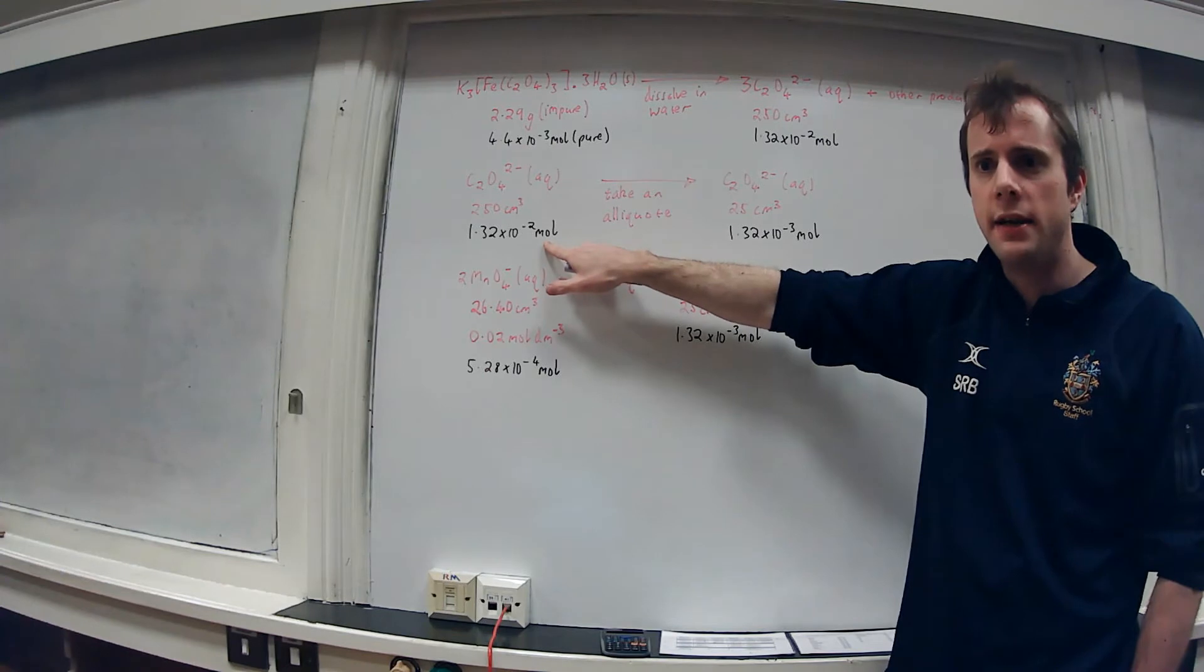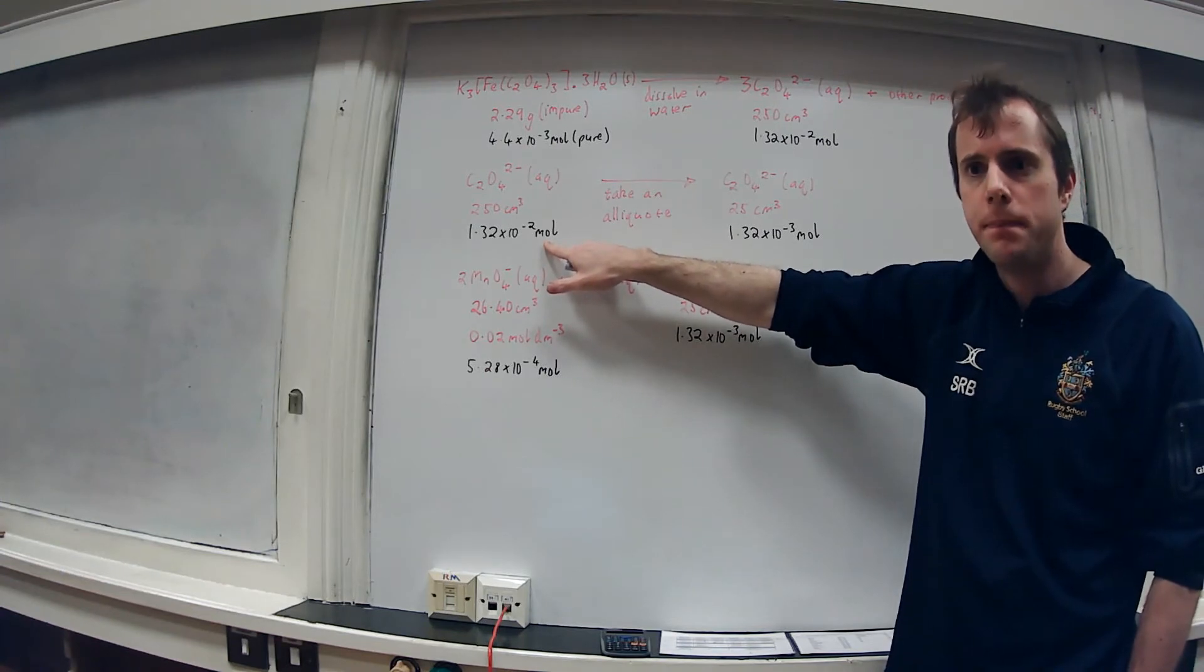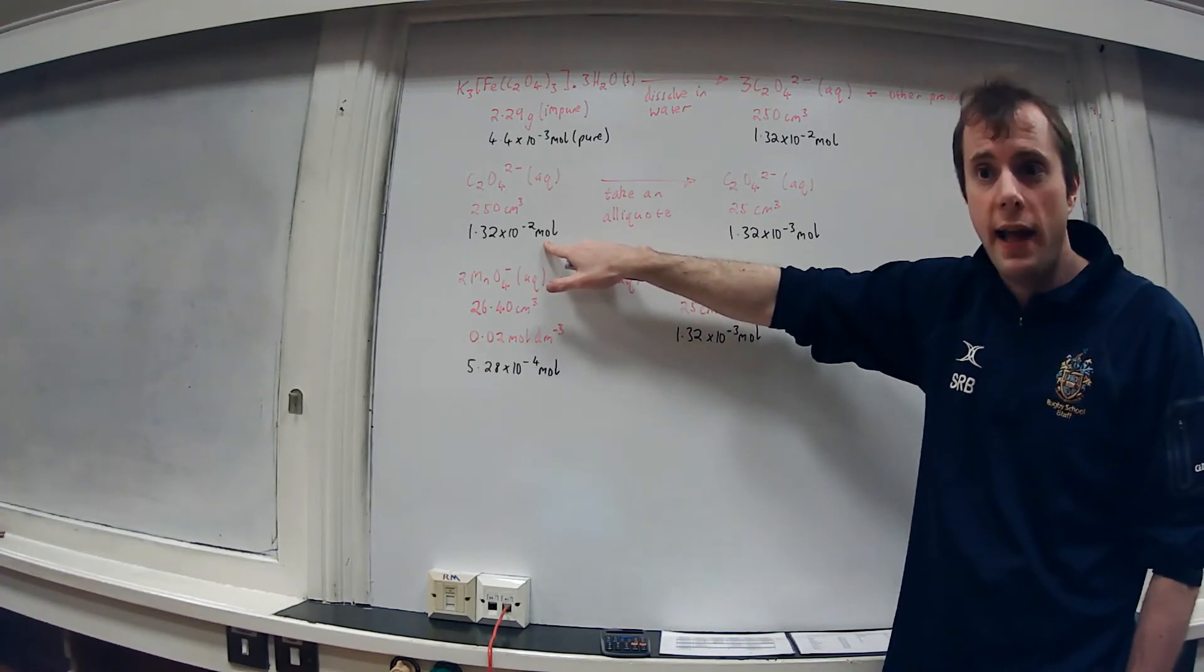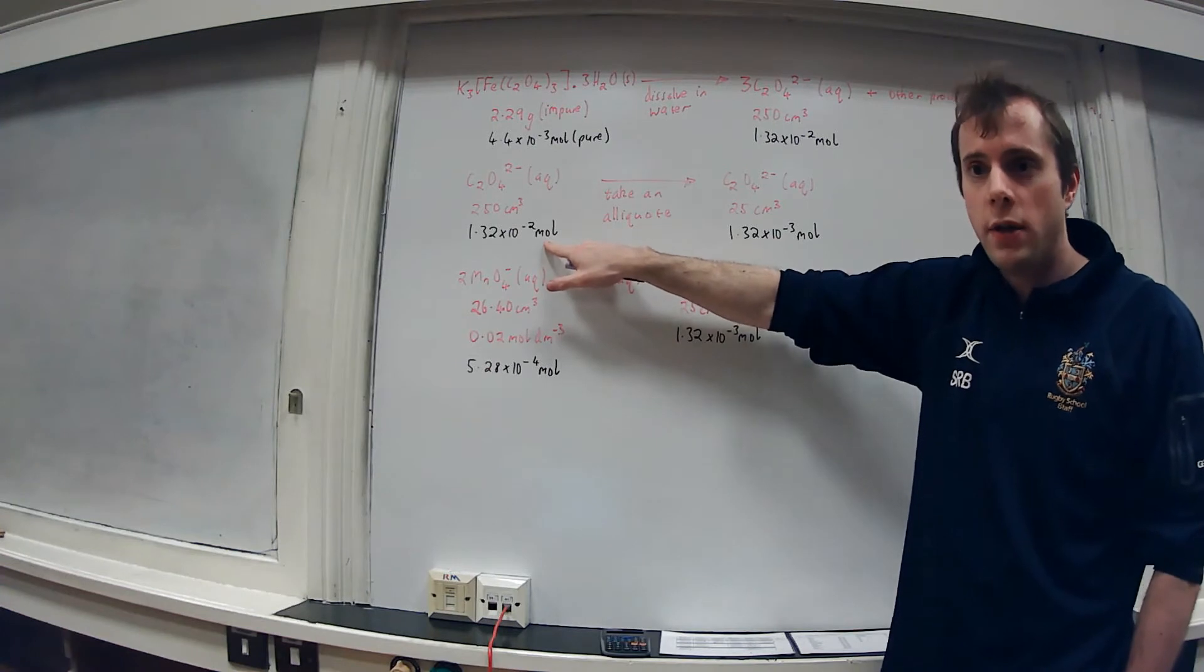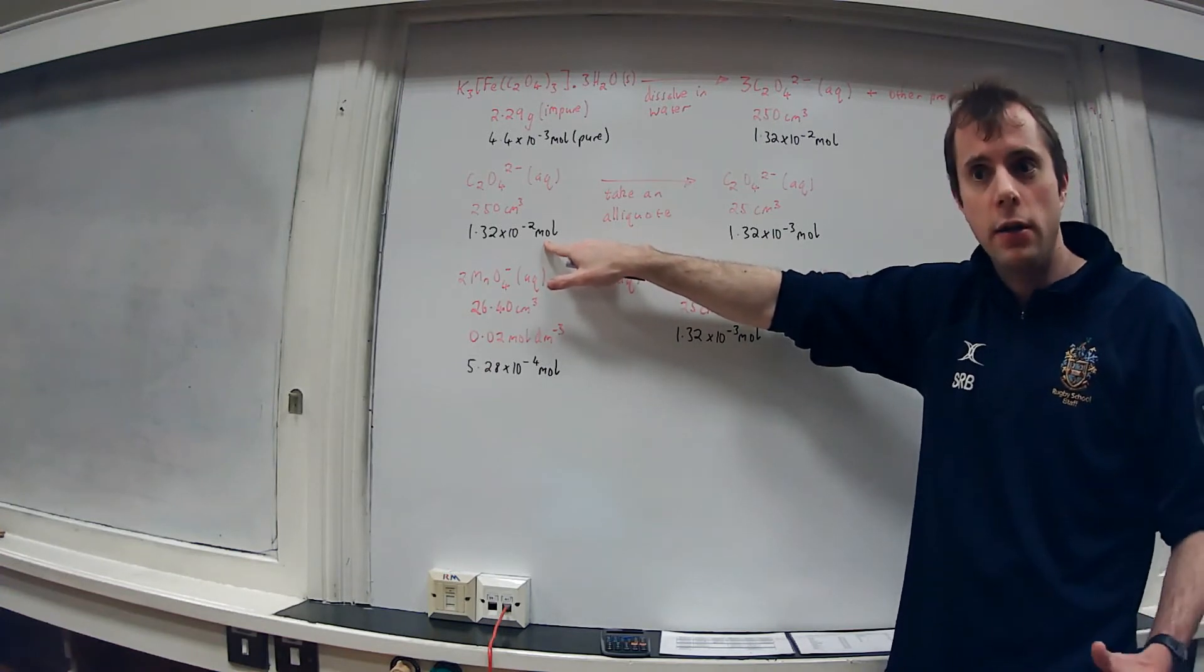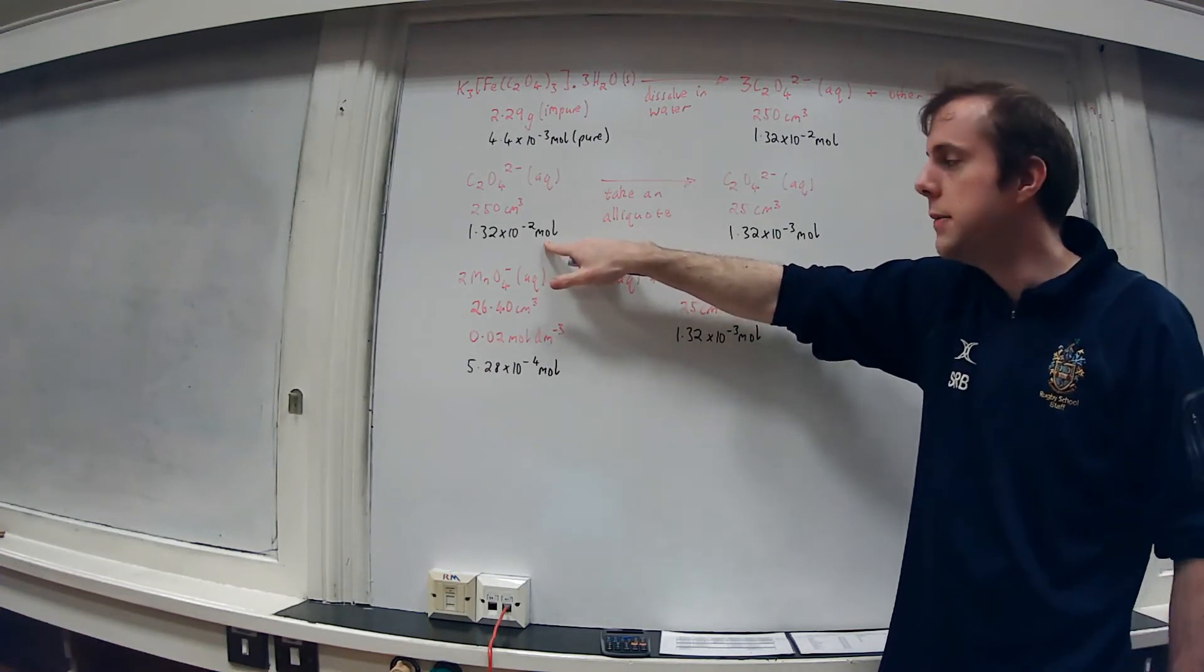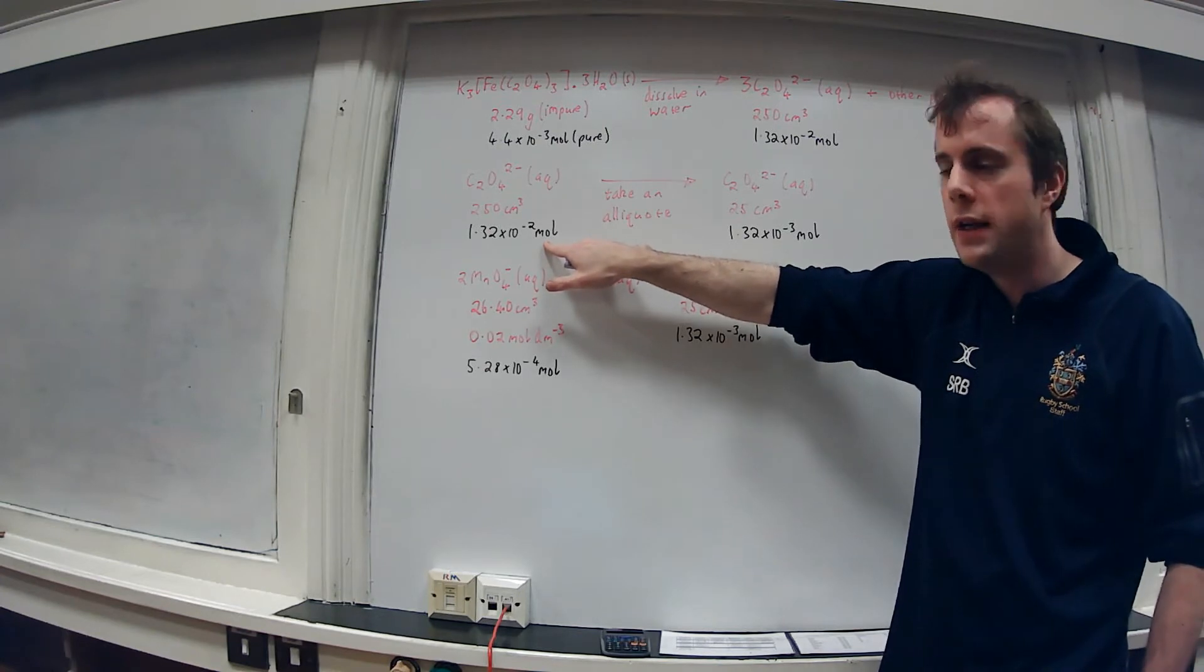Before we took the aliquot we have 10 times that, 1.32 times 10 to the -2 moles. Again, without all of these quasi equations that would be something that could easily be a mess. It's quite common to be out by a factor of 10 with these calculations.